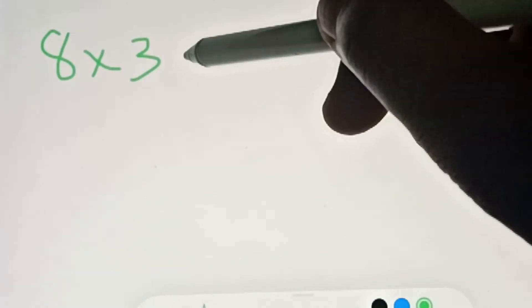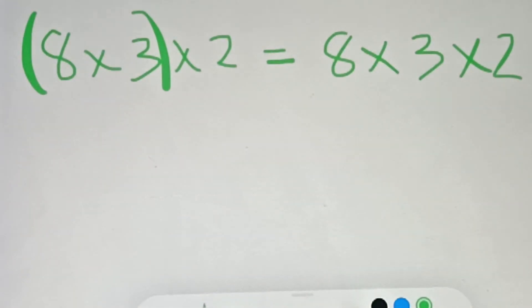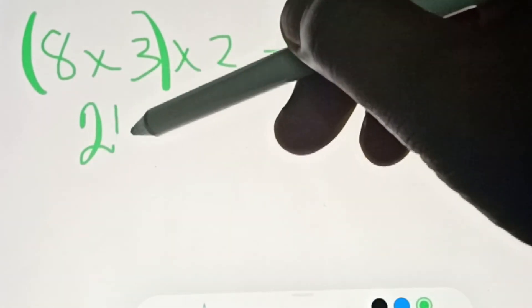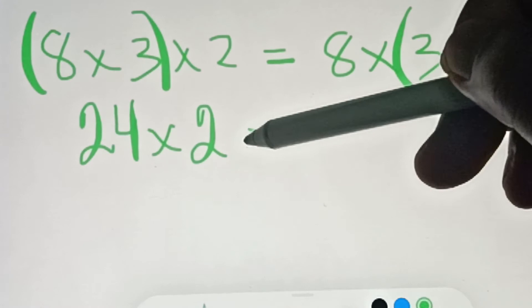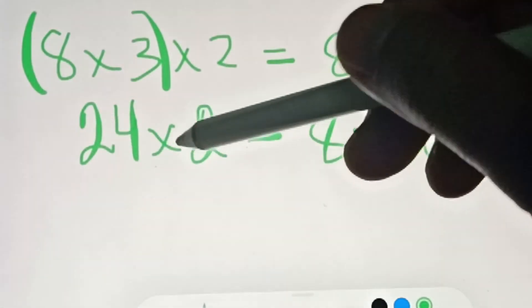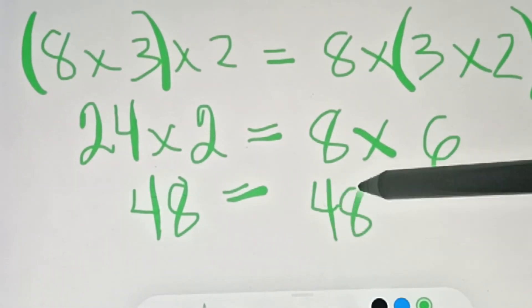For the last example, under the associative property of multiplication: if you have 8 times 3 times 2, that equals (8 times 3) times 2 = 8 times (3 times 2). On this side, 8 times 3 is 24, times 2 equals 48. On the other side, 3 times 2 is 6, and 8 times 6 is also 48.